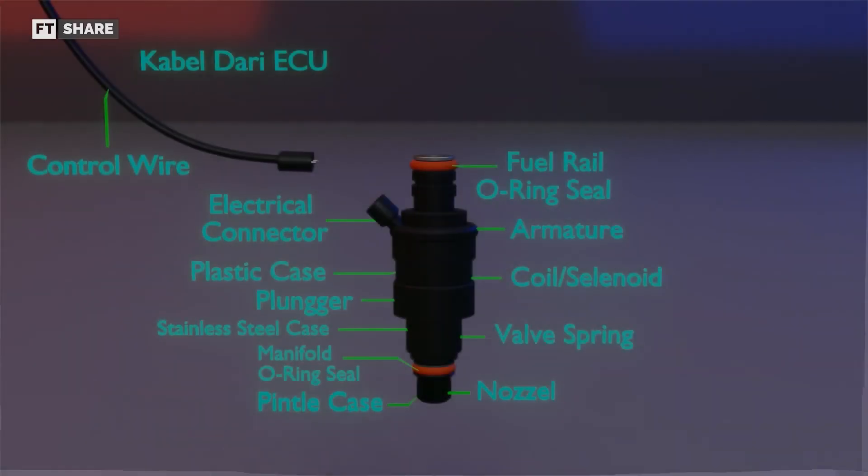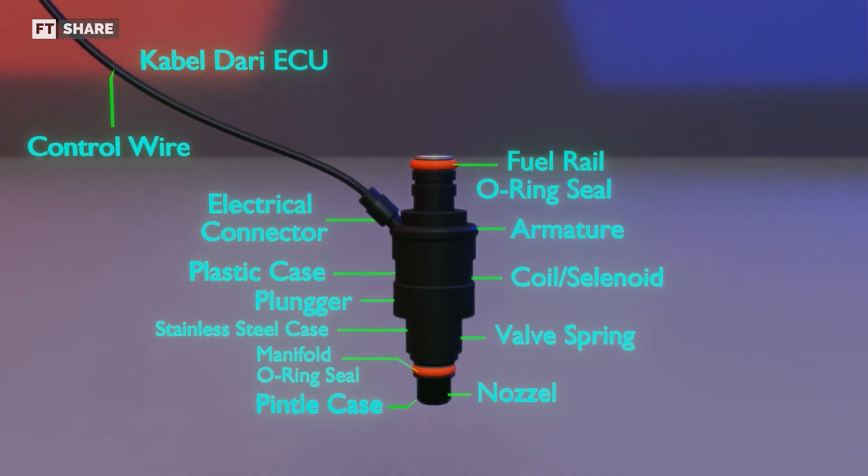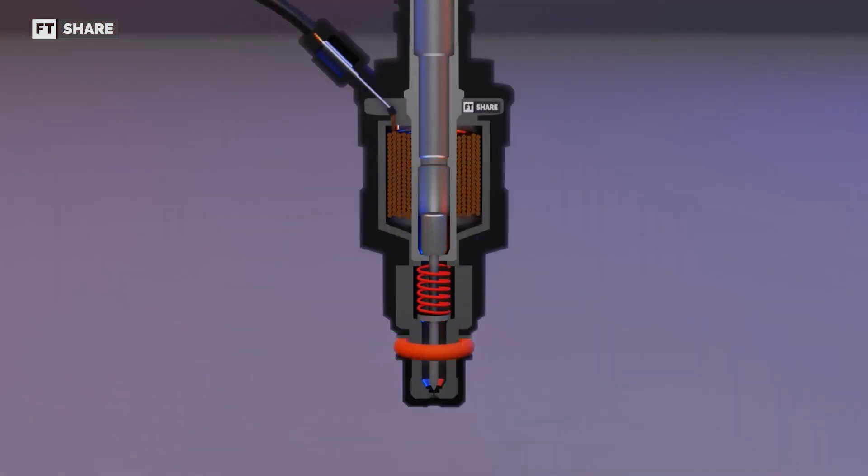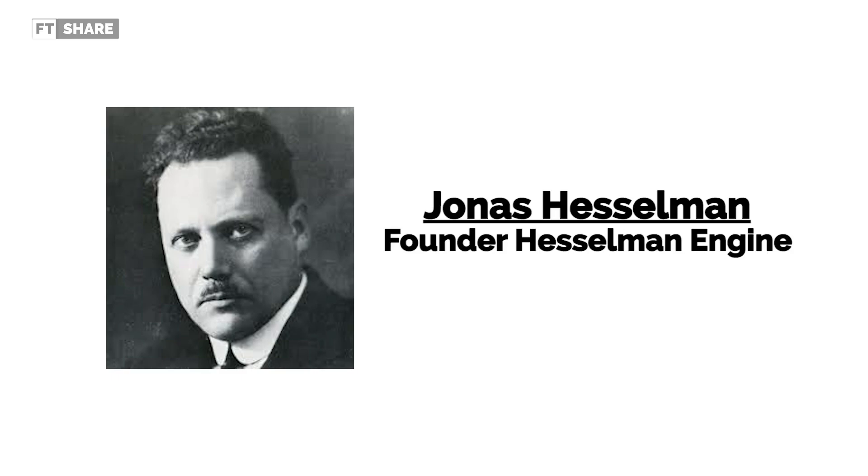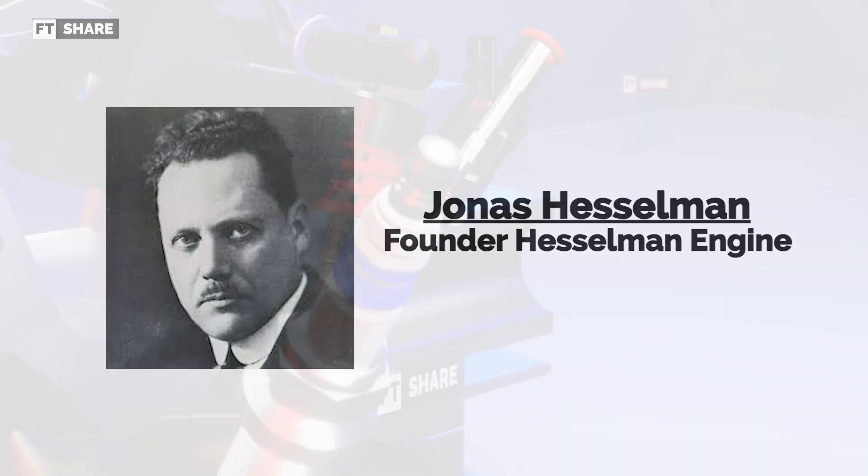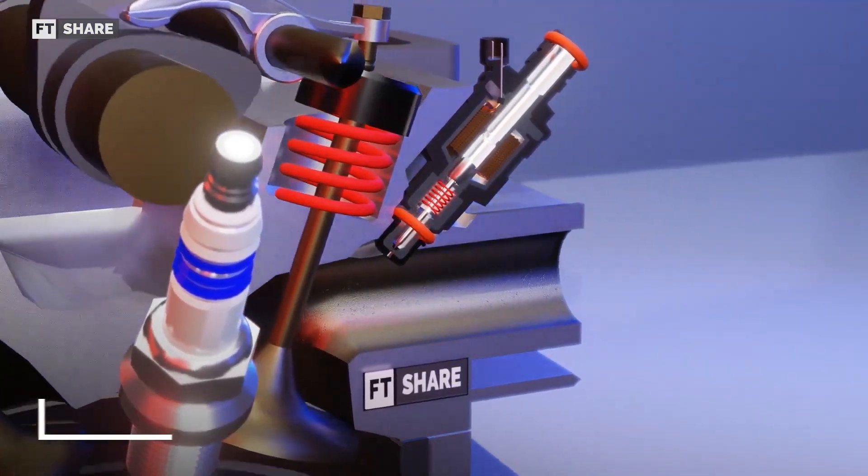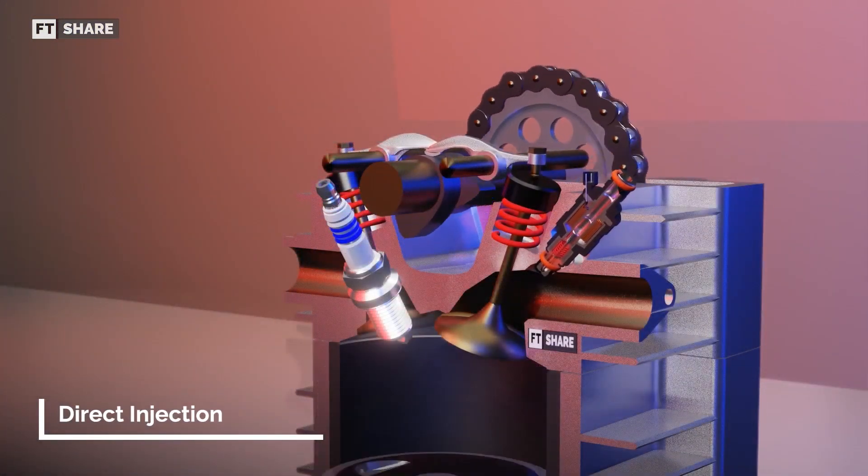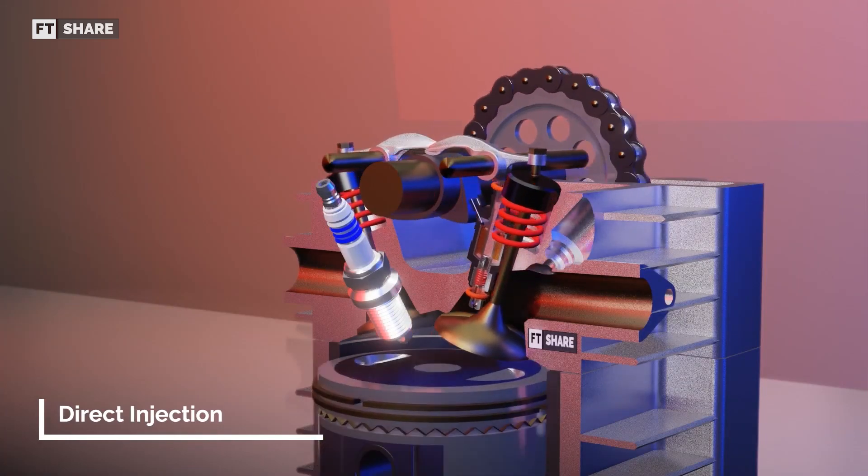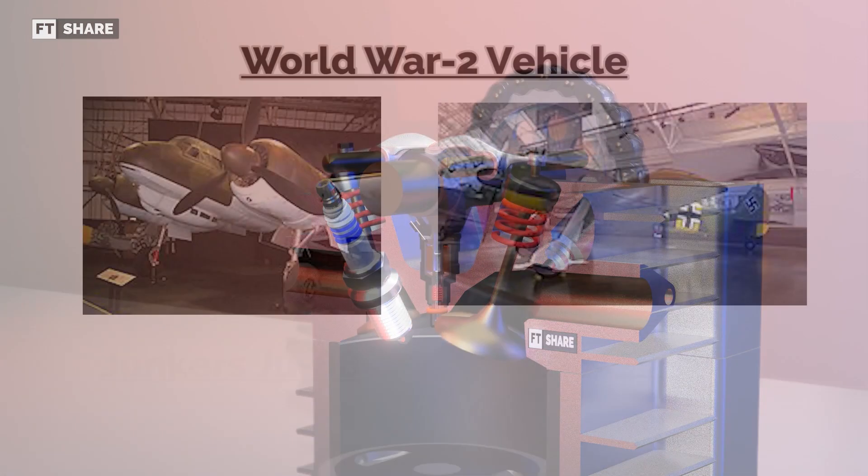Of course, this is very different from modern injection, which uses electronic fuel pump pressure. The use of jerk injection on the vehicle engine itself takes quite a long time, about 30 years after its discovery. Jonas Hesselmann, through his company Hesselmann Engine, tried to apply it in diesel engines, starting from the application in the intake manifold, which we know as indirect injection, and also the placement of injection in the cylinder, or what we know as direct injection.